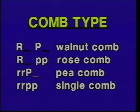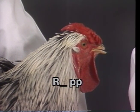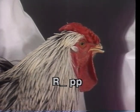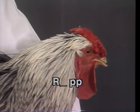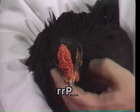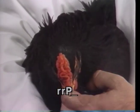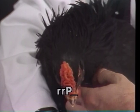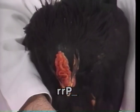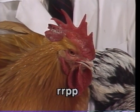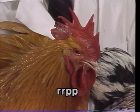Let's review comb types. Comb type is controlled by genes at two loci. The walnut comb results from combining the big R allele with the big P allele. The rose comb results from homozygous little p alleles and a big R allele at the R locus. Pea combs come from homozygous small r — the recessive alleles — and a large P allele. And finally, the single comb results from homozygous recessive at both the R and P loci.